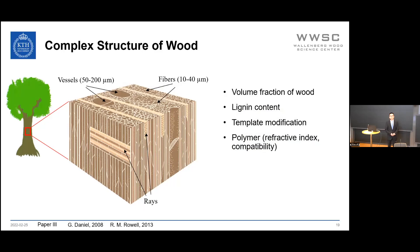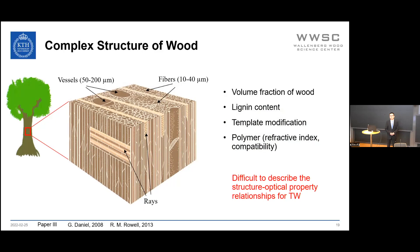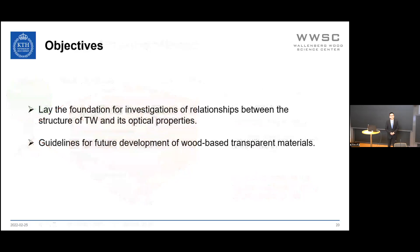In addition, the volume fraction of wood and lignin content from different wood species are different, and template modification and polymer properties—for example, refractive index and compatibility between wood templates—vary, all of which influence the optical properties of transparent wood. Due to this structural complexity, the objective of this thesis is to lay the foundation for investigating relationships between the structure of transparent wood and its optical properties, and to suggest guidelines for future development of wood-based transparent materials.